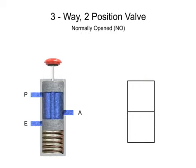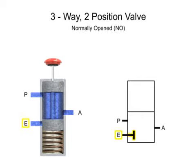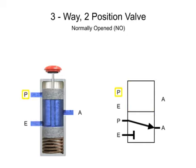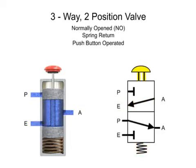Here is another three-way, two-position valve. This valve also has an inlet port P, exhaust port E, and output port A, but they are in a different configuration. In its normal position, exhaust port E is blocked and fluid flows from pressure port P to outlet port A. In the second position, pressure port P is blocked and fluid flows from outlet port A to exhaust port E. The valve is also spring return and push button operated.